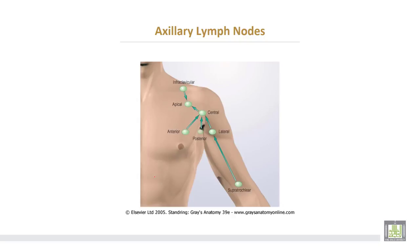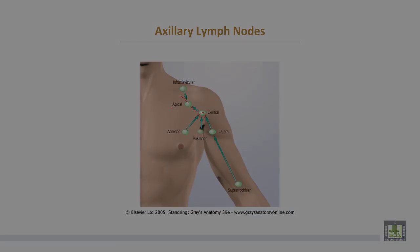The different groups of lymph nodes in the axilla: the lateral or brachial group, the posterior or subscapular group, and the anterior or pectoral group all drain into the central group, then into the apical group, and lastly the infraclavicular group.